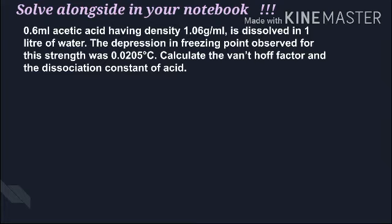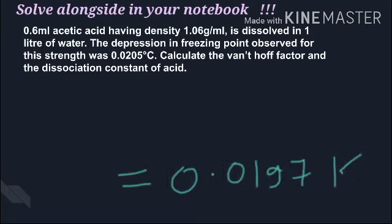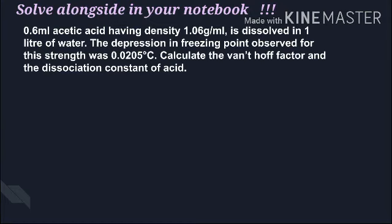We calculated molality because the second part - the dissociation constant - will help us. What is the general relation? ΔTf = Kf × m (molality). Kf is 1.86 Kelvin kg per mole, and molality is 0.0106. Delta Tf calculated is around 0.0197 Kelvin. In the question it is 0.0205, so there is dissociation.